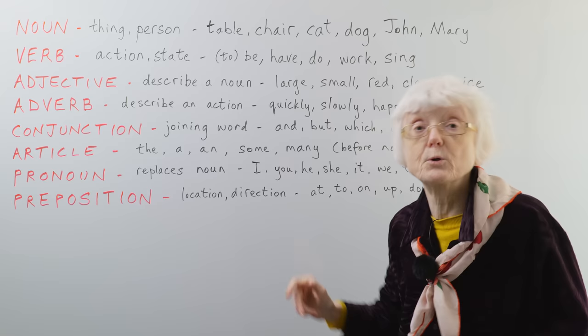And then, finally, prepositions which are all to do with a location or a direction. It could be some movement towards something, or it could be to do with being in a location and your relationship to that location. At, I am at the supermarket. I'm going to the supermarket. That's more movement, direction. On, I'm sitting on the chair. I'm going up the stairs or down the stairs. I'm in the house. That's all to do with the relationship to where you are or where you're going from one place to another.